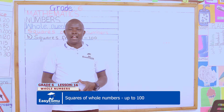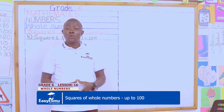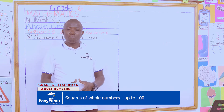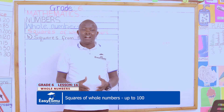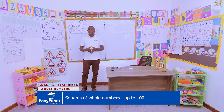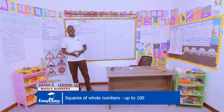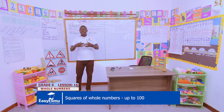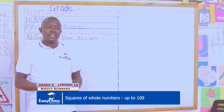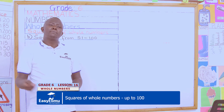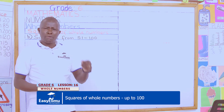My question is: how do you compute the square of a number, and where do we use squares in our real life? For more on this, let's do a recap of our previous lesson. A square number is the product of a number multiplied by itself.